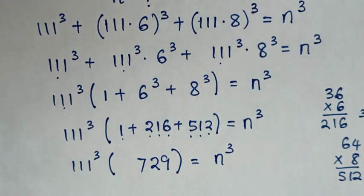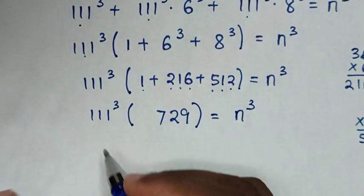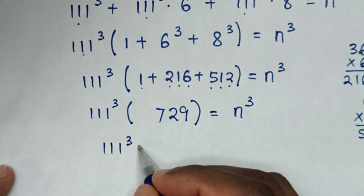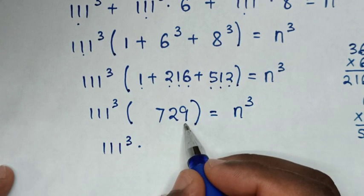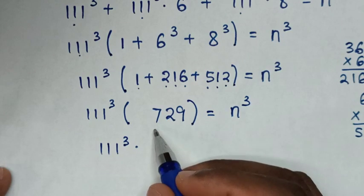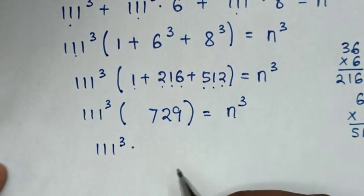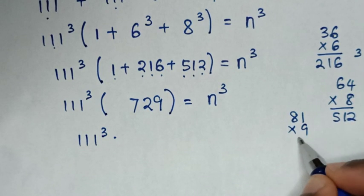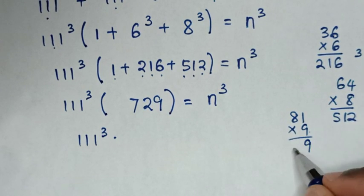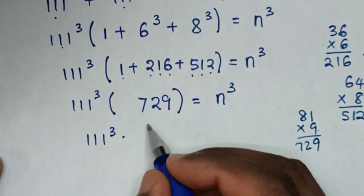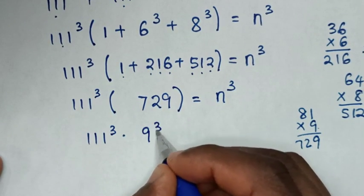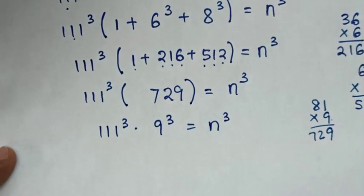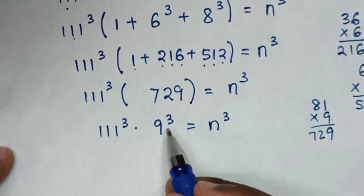Then in the next step, 729 is the same as 9 times 9 times 9. Since 9 times 9 is 81, and 81 times 9 is 729, so 729 equals 9 power of 3. This gives us 111 power of 3 times 9 power of 3 is equal to n power of 3.